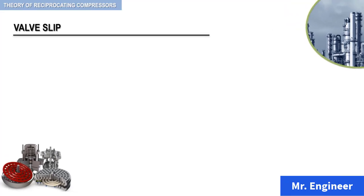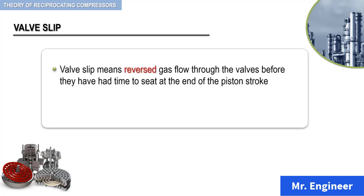Valve slip means reversed gas flow through the valves before they have had time to seat at the end of the piston stroke. Obviously, this volume loss can occur through both intake and discharge valves. The minimum slippage occurs in a responsive valve, one that has minimum inertia so that the moving element can easily be controlled by gas flow.